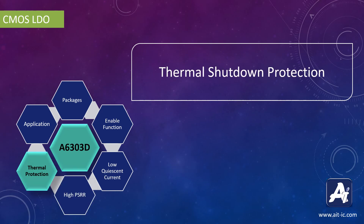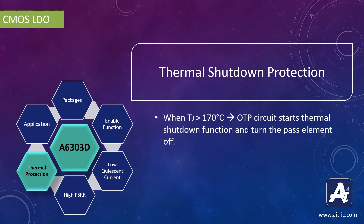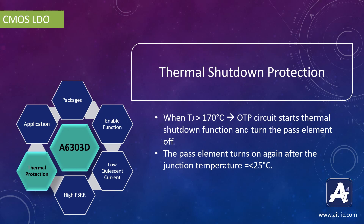A very important feature of this IC is thermal shutdown protection. When the junction temperature reaches 170°C or above, the internal OTP circuit starts the thermal shutdown process and turns the pass element off. The pass element is turned back on only when the junction temperature cools by 25°C, and for continuous operation, the junction temperature should be maintained at 125°C.